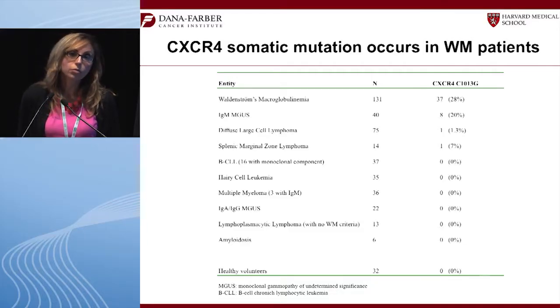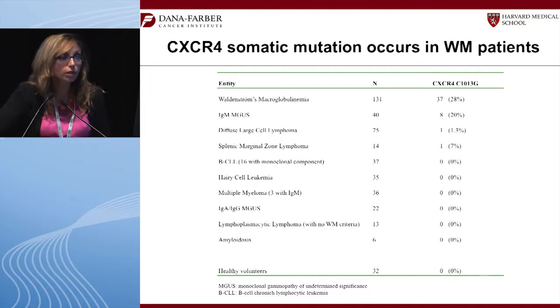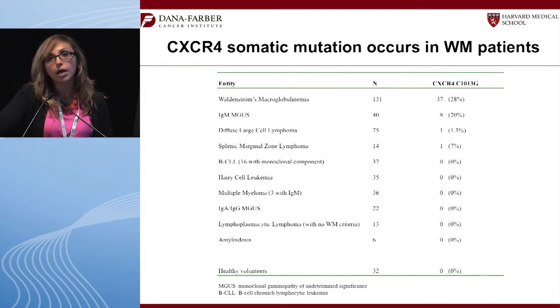CXCR4 also regulates the BTK receptor, which is where ibrutinib works well — not only for Waldenström but for many other B-cell malignancies. In unpublished data, we looked at Waldenström, IgM MGUS, and many other lymphomas including large cell lymphoma, splenic marginal zone lymphoma, and hairy cell leukemia, in collaboration with the Jesus San Miguel group. We found that 28% of patients with Waldenström have a CXCR4 C1013G mutation — the WHIM syndrome mutation — characterized by hyper-activation of CXCR4 leading to cell dissemination rather than retention in the bone marrow. This mutation was not present in myeloma, IgA or IgG MGUS, or other non-IgM lymphoplasmacytic lymphomas.